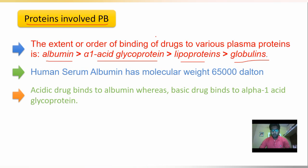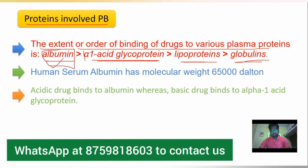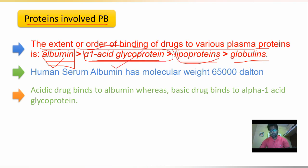The order of binding of drugs to various plasma proteins is: albumin first, then alpha-1 glycoprotein, then lipoprotein, then globulins. That means drug molecules always prefer to bind albumin first — highest binding occurs between the drug molecule and albumin.